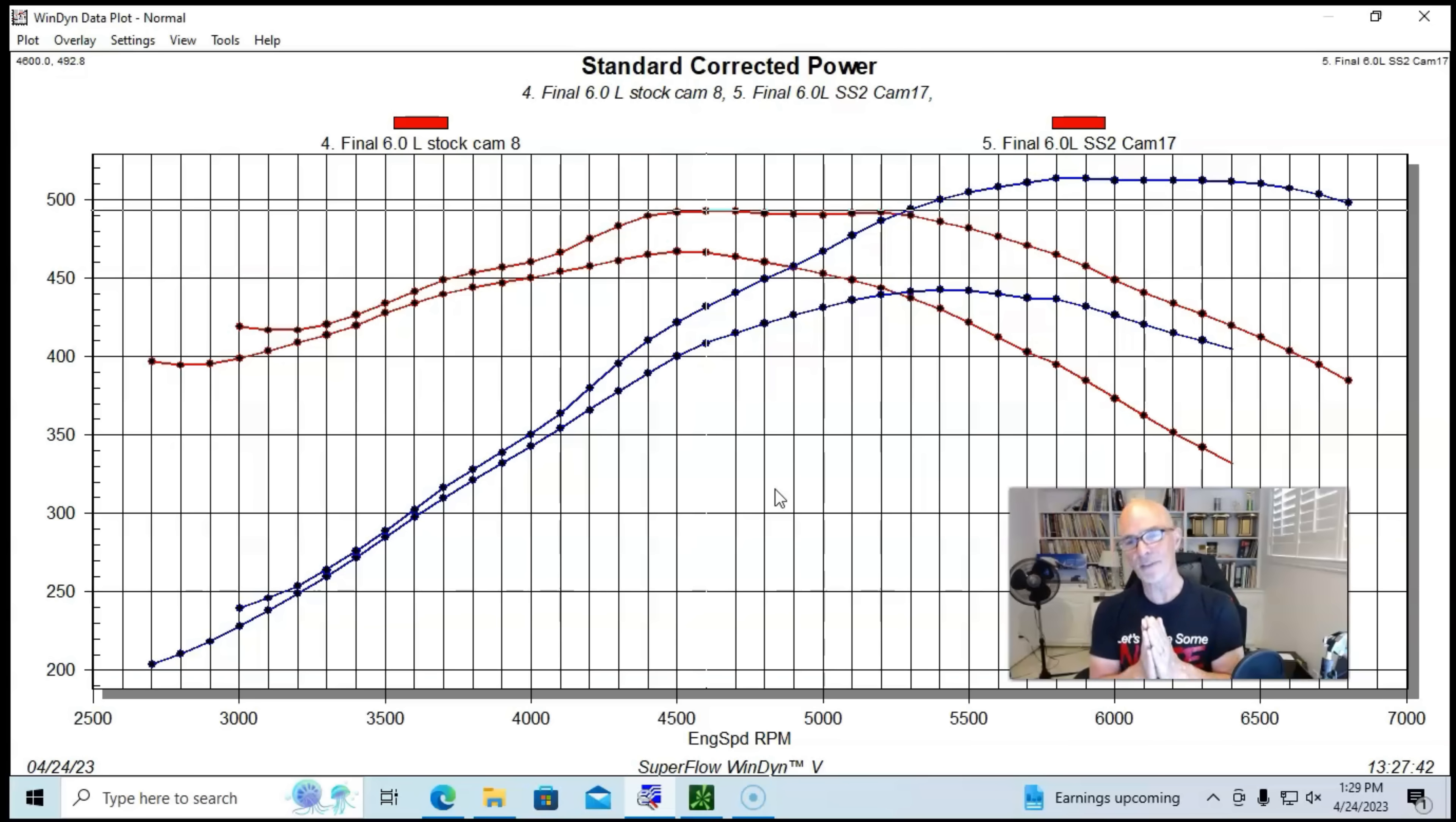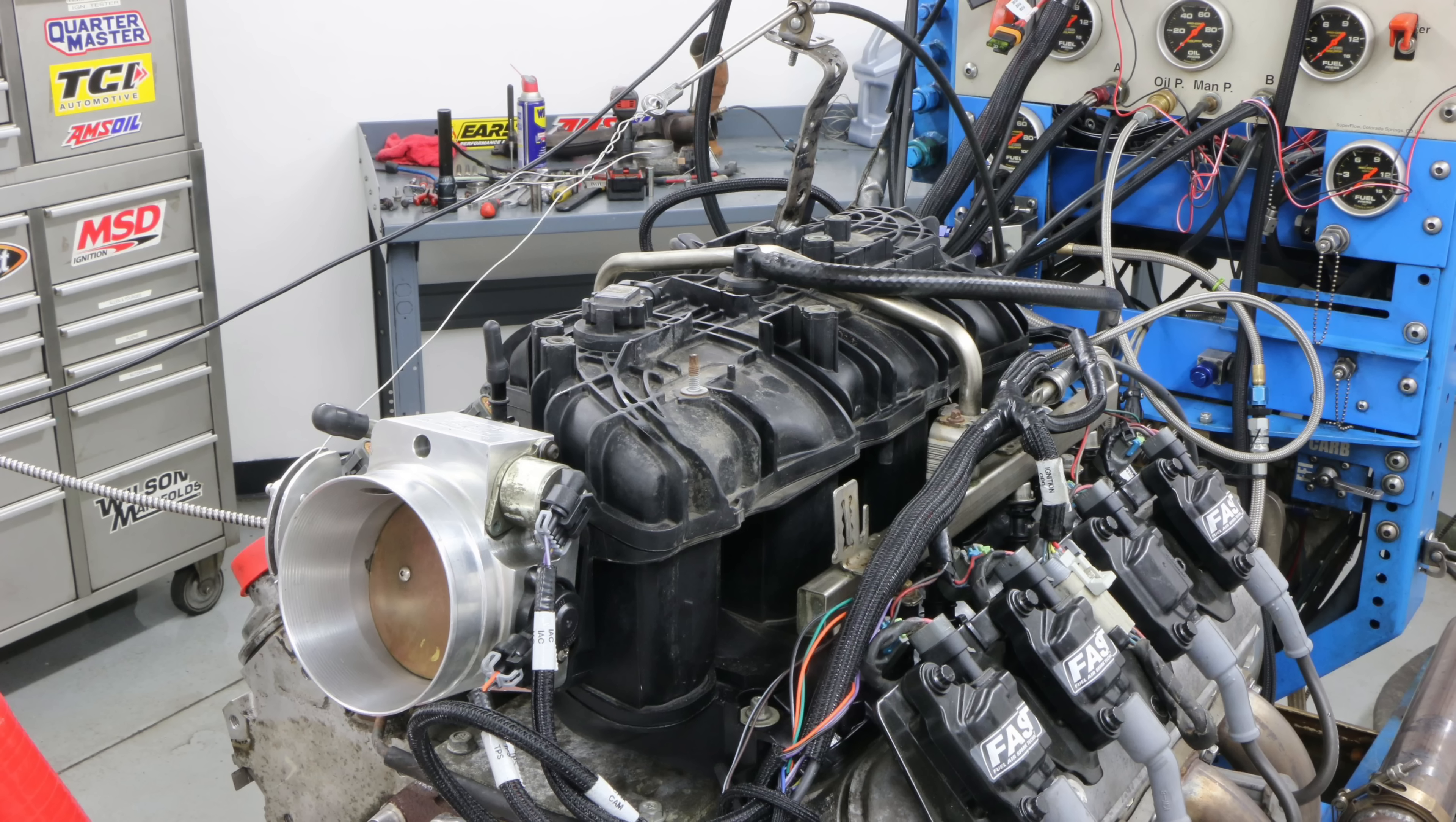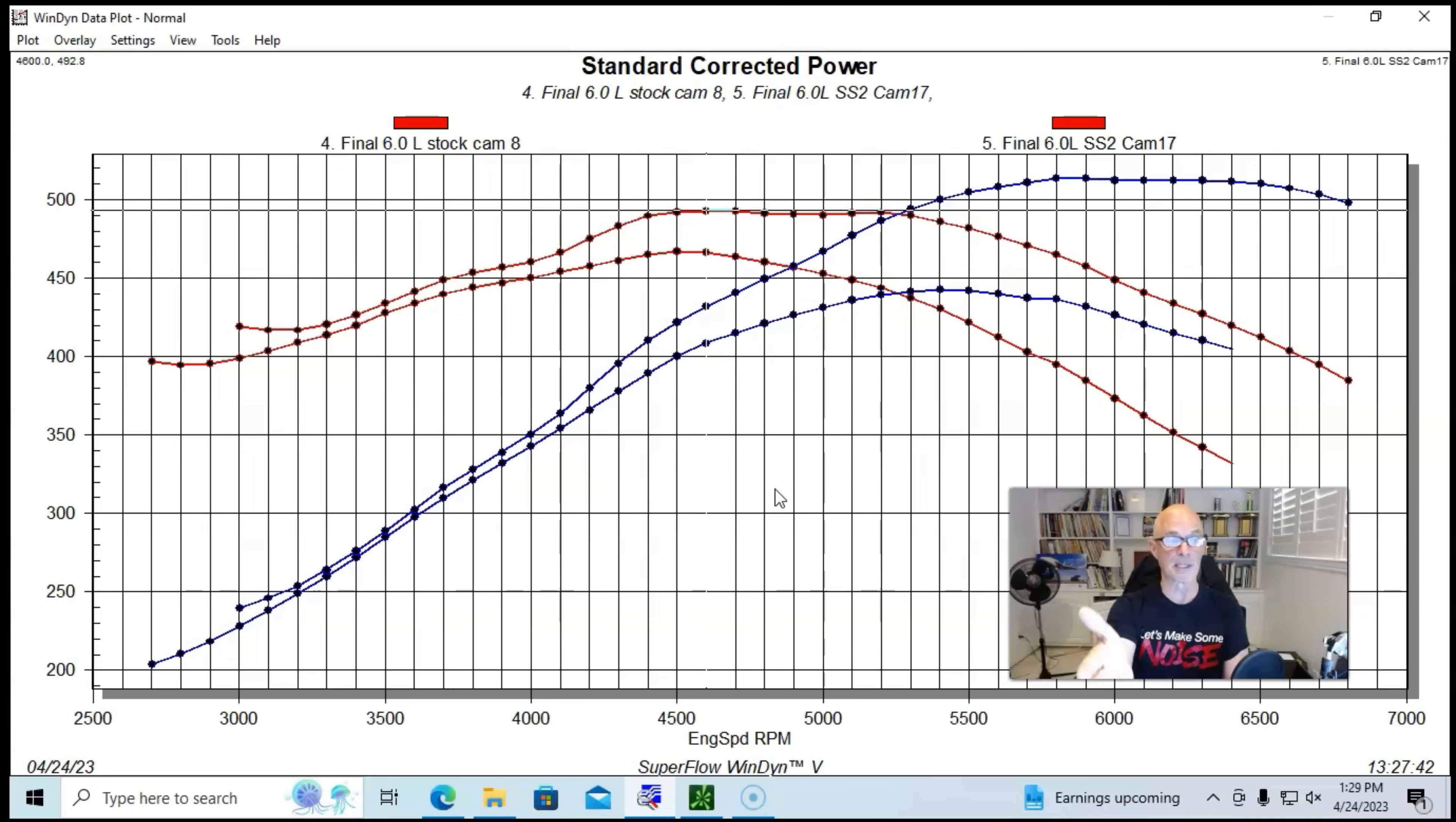So we're looking at a motor with this sloppy stage 2 cam on the 6 liter that makes 514 horsepower and 493 foot-pounds of torque. We already know from the 5-3 testing that the sloppy stage 2 and the truck Norse cam made within one foot-pound of each other. So it's a pretty good assumption that that's probably going to continue.